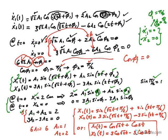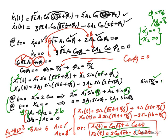Solving this system: multiply the first equation by 3 to get 3a1 + 3a2 = 6, then add to 3a1 − 3a2 = 0 to get 6a1 = 6, so a1 = 1. Then from a1 + a2 = 2, we get a2 = 1 as well. Plugging everything in and noting that sin(θ + 90°) = cos(θ), we can write the final solution in cosine form.